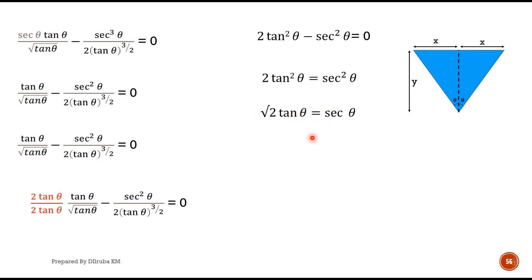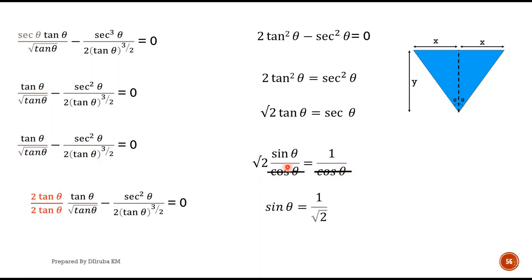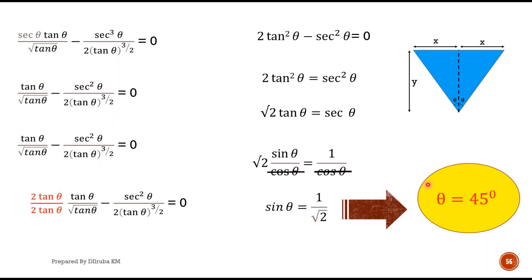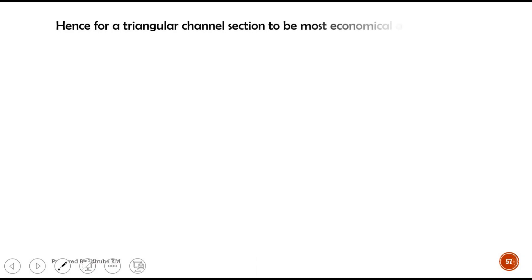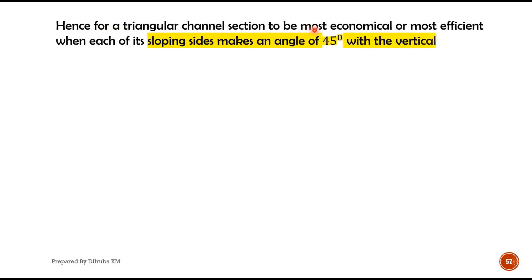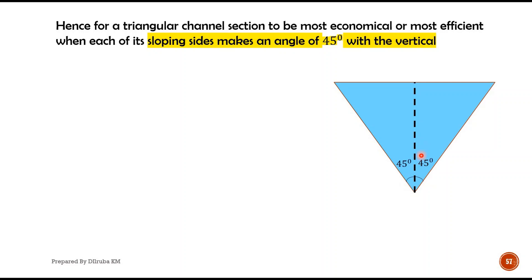We know tan θ = sin θ / cos θ and sec θ = 1 / cos θ. Cancelling cos θ from both sides, the equation becomes sin θ = 1/√2. We know sin θ = 1/√2 for θ = 45°. So for a triangular channel section to be most economical, the sloping side must make an angle of 45° with the vertical.